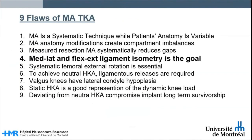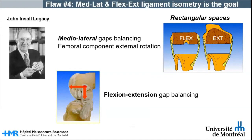Medial-lateral and flexion-extension ligament isometry is the goal. The creation of an extending rectangular space with neutral sections — hence mechanical alignment — has been described by John Insall as the extension gap, and he is credited with having started teaching ligament balance with joint gaps. The space created by the resection of posterior condyles and the proximal tibia creates the flexion gap. To create a rectangular space in flexion, the modification of the natural varus of the proximal tibia very often requires external rotation of the femur.